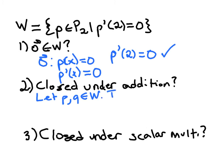But so let's just assume that P and Q are polynomials from this subset W. If that's the case, then we know that P prime at 2 is 0, and also that Q prime at 2 is 0. Since these polynomials came out of the subset W, then we know they already meet this criteria right here.